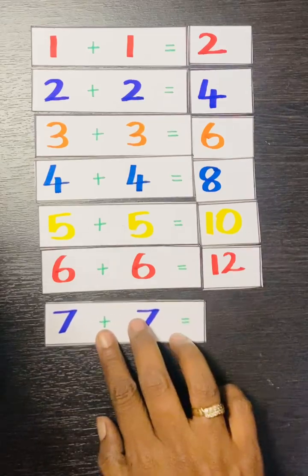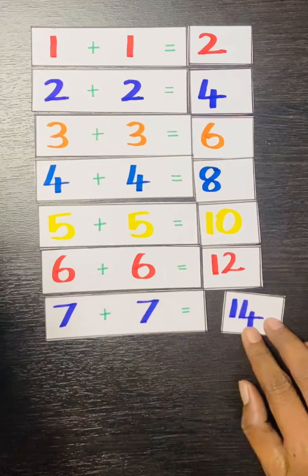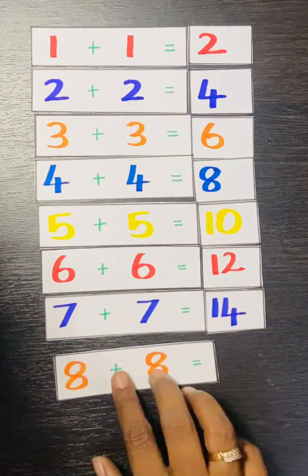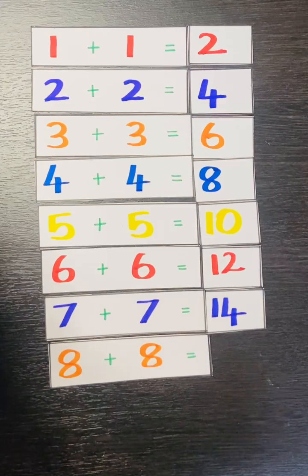7 plus 7. 7 plus 7 is equal to 14. 8 plus 8. 8 plus 8 is equal to 16.